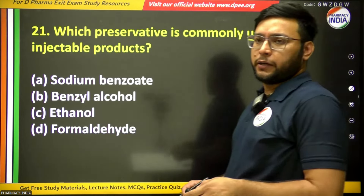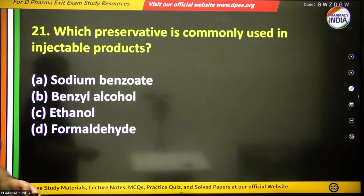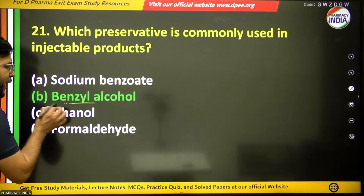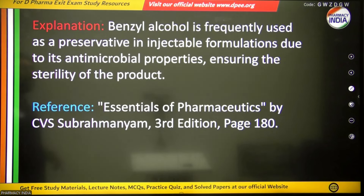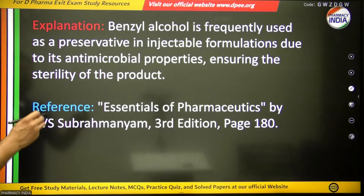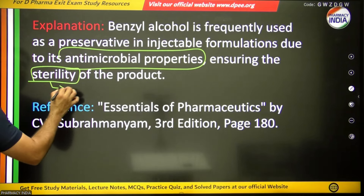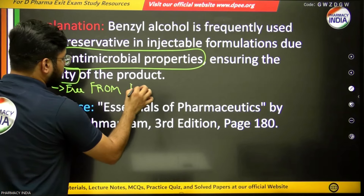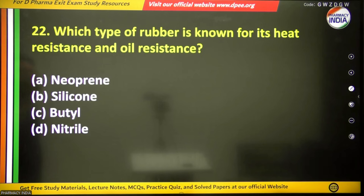The twenty-first question: which preservative is commonly used in injectable preparations? Options include sodium benzoate, ethanol, benzyl alcohol, or formaldehyde. The answer is benzyl alcohol — it is frequently used as a preservative in injectable formulations due to its antimicrobial properties, ensuring sterility, meaning freedom from microorganisms.